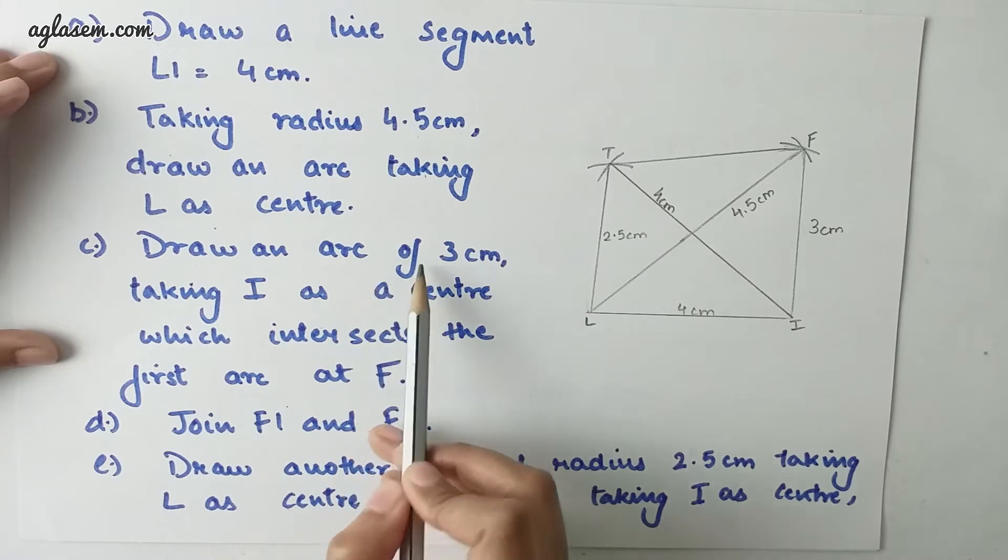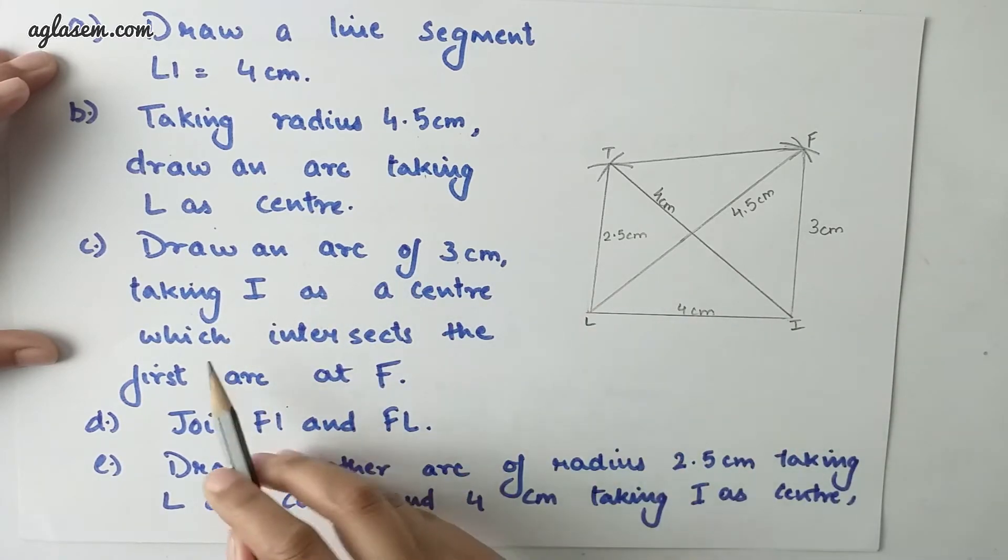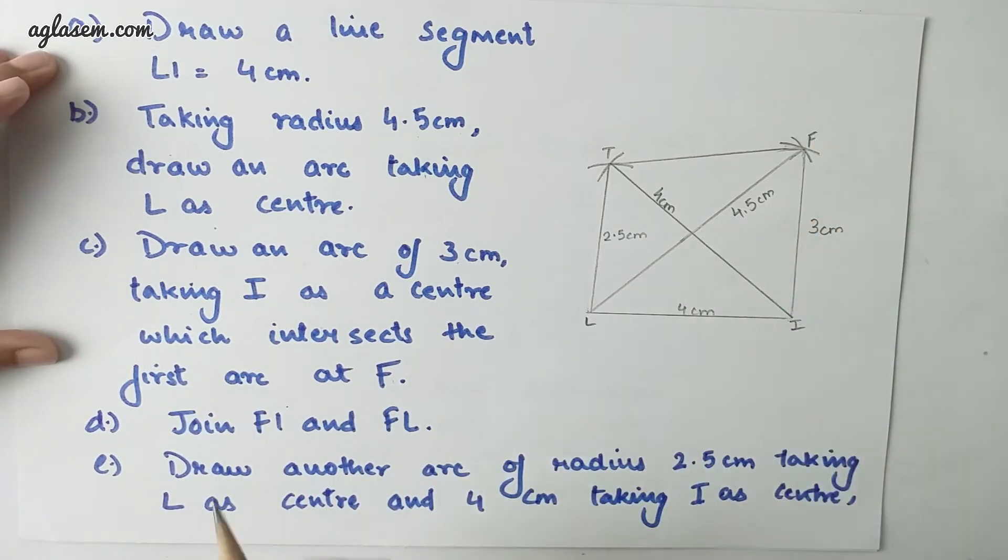Draw an arc of 3 cm taking I as center which intersects the first arc at F. Join FI and FL.